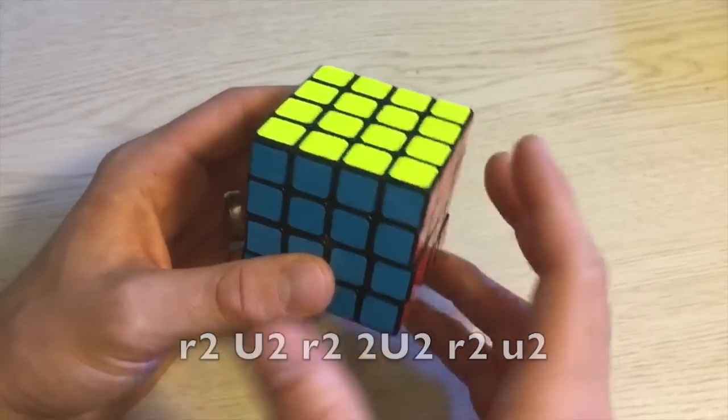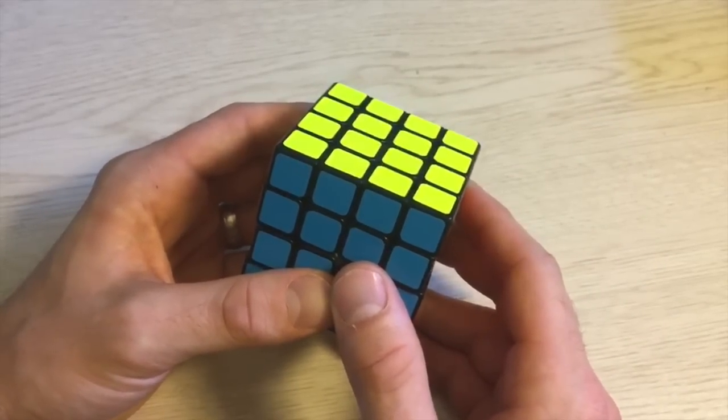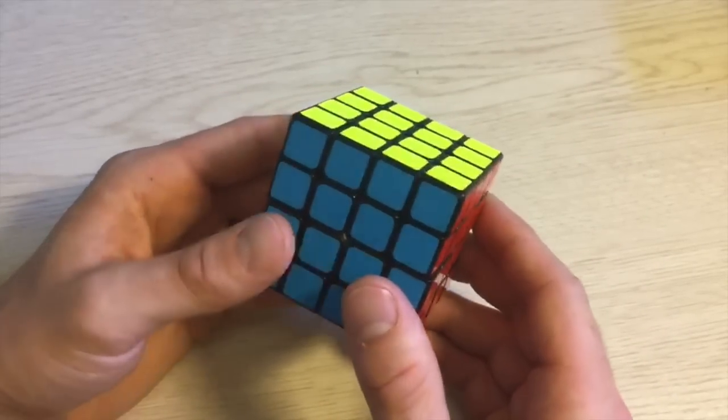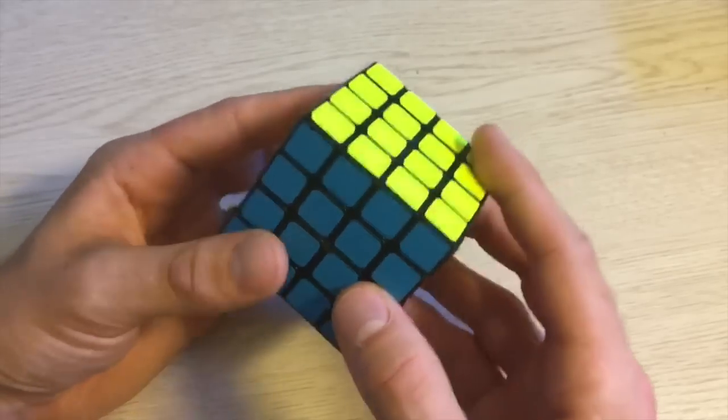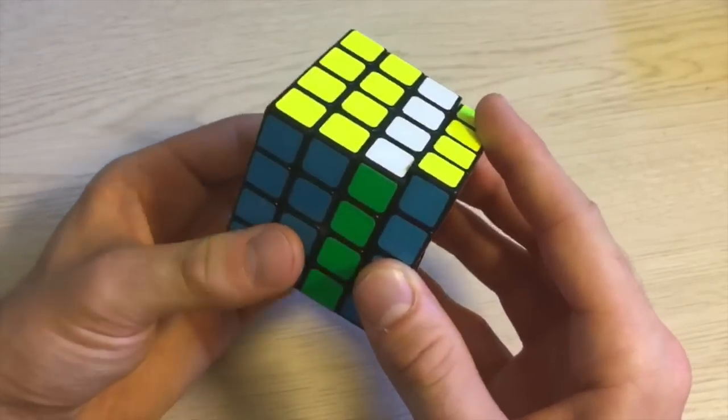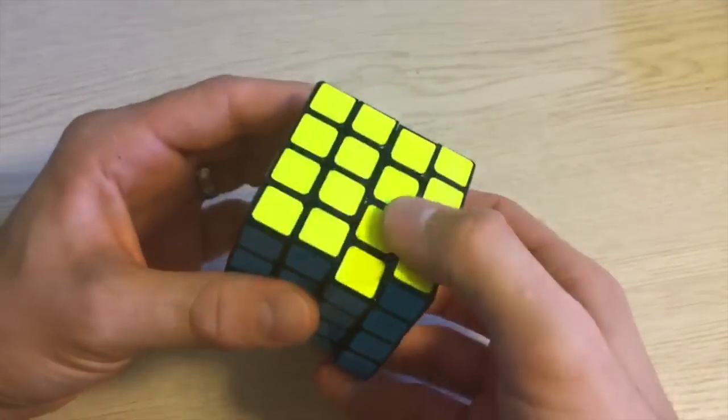Whenever you have an inner slice, you do not have to turn it like I just did. You can just turn two faces 180 degrees followed by the outer face another 180 degrees. I will often do this just because it's a little bit safer and usually faster to execute.